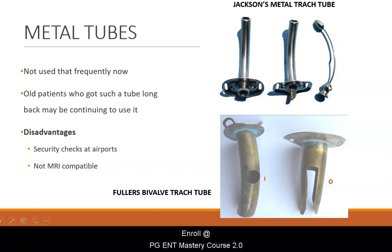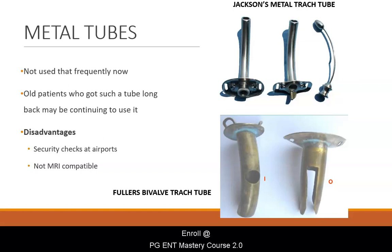Here we come to an end of our topic. We discussed the types of tracheostomy tubes: cuffed tubes, uncuffed tubes, fenestrated tubes, tubes where the length can be adjusted using an adjustable flange, and metal tubes — five types in total. We also saw the parts of a tracheostomy tube. Thanks for listening.